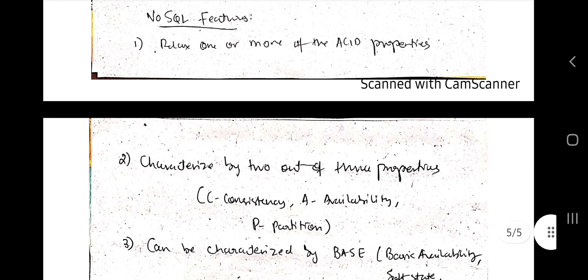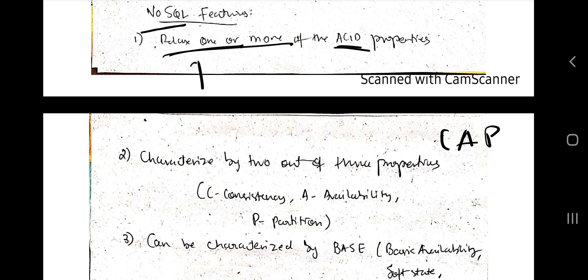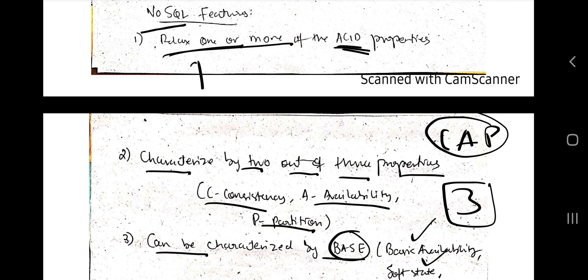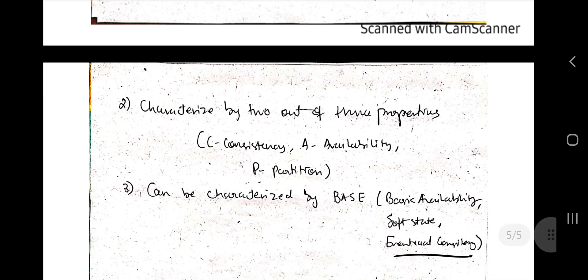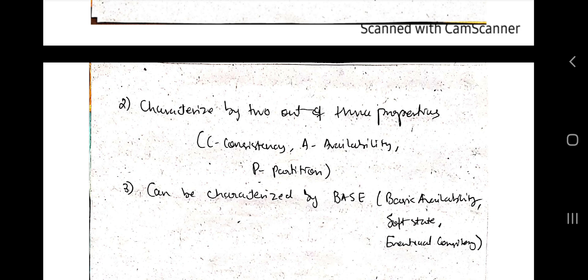After the characteristics, we have features. Since NoSQL follows the CAP theorem, it obviously does not follow ACID properties — it relaxes one or more of the ACID properties. It is characterized by two out of three CAP properties: consistency, availability, and partition. And it can be characterized by BASE: Basic Availability, Soft state, and Eventual consistency. So we have ACID, CAP, and BASE. That's all for this video — hit the like button, subscribe, and I'll see you in part two.